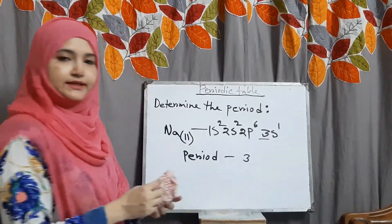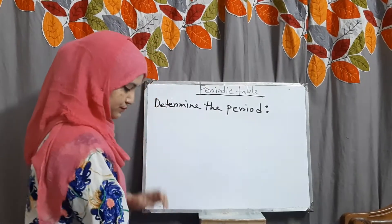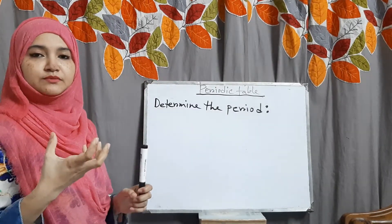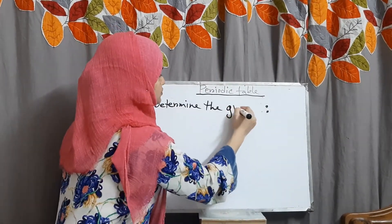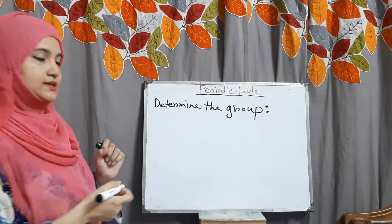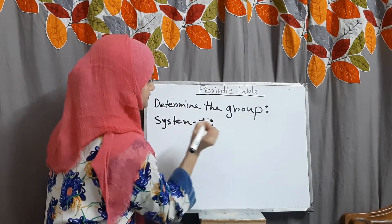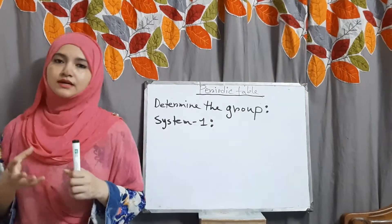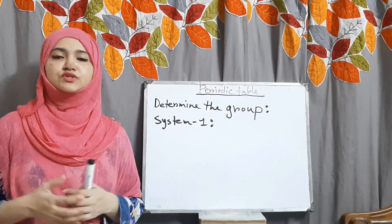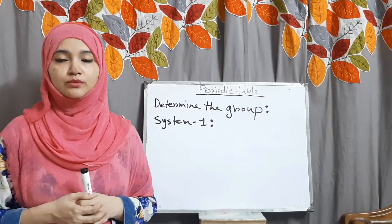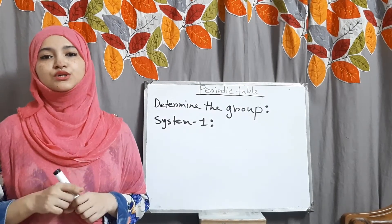Now, there are 3 rules for determining the group or column. System 1 says that if the main energy level — the outermost energy level — contains only S orbital, then the total number of electrons in that S orbital will be the group number of that element.